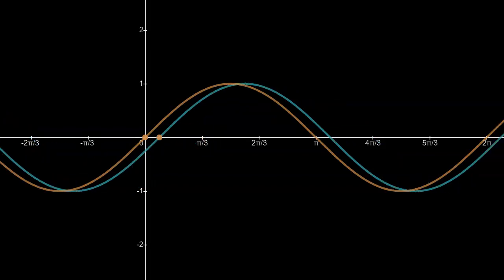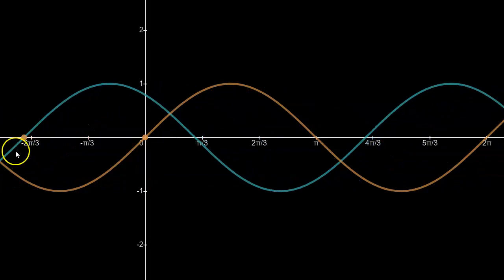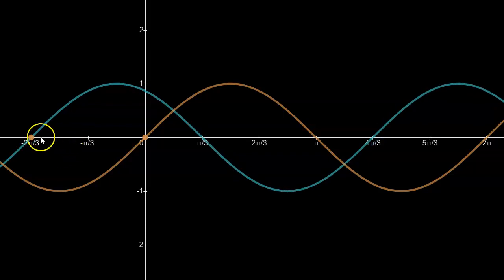Similarly, if I shift it to the left to this point, I can tell this is where it started, this is where it ended up at negative 2 pi over 3. So 2 pi over 3 to the left would be the horizontal phase shift.